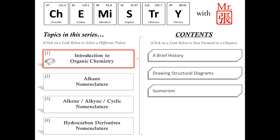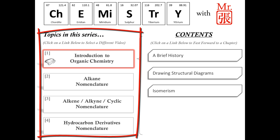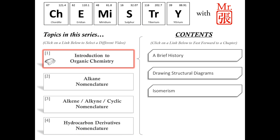If you wish to skip ahead to a different video in the series, click on any of the links located on the left hand side of your screen. Otherwise in this particular video we'll be looking at a brief history of organic chemistry, how organic chemicals can be represented with structural diagrams, as well as a brief introduction to isomerism — the main reason why organic compounds have such long and complicated names.